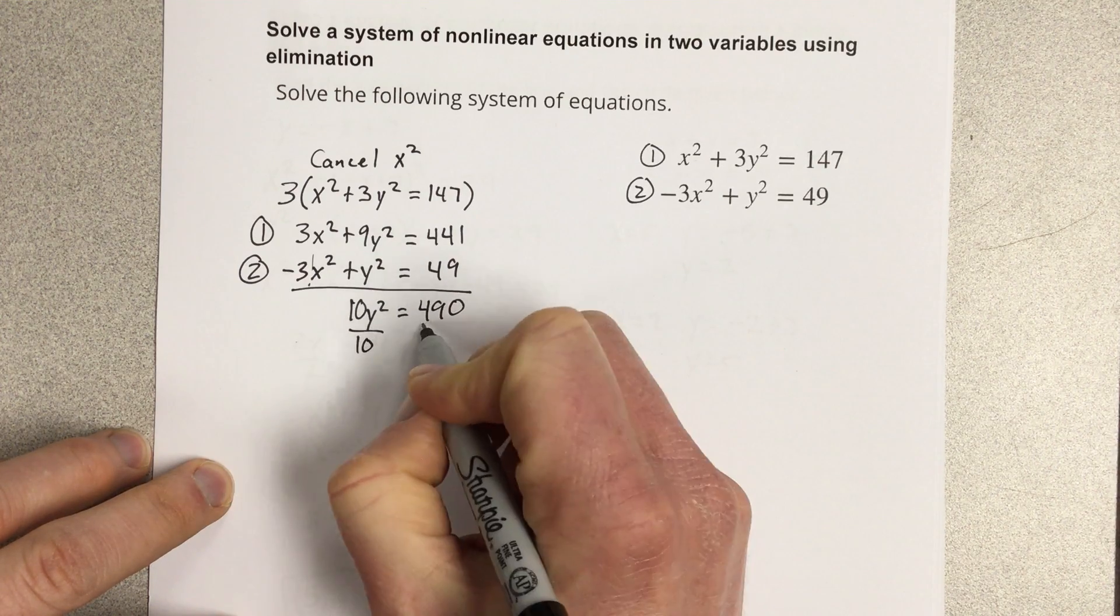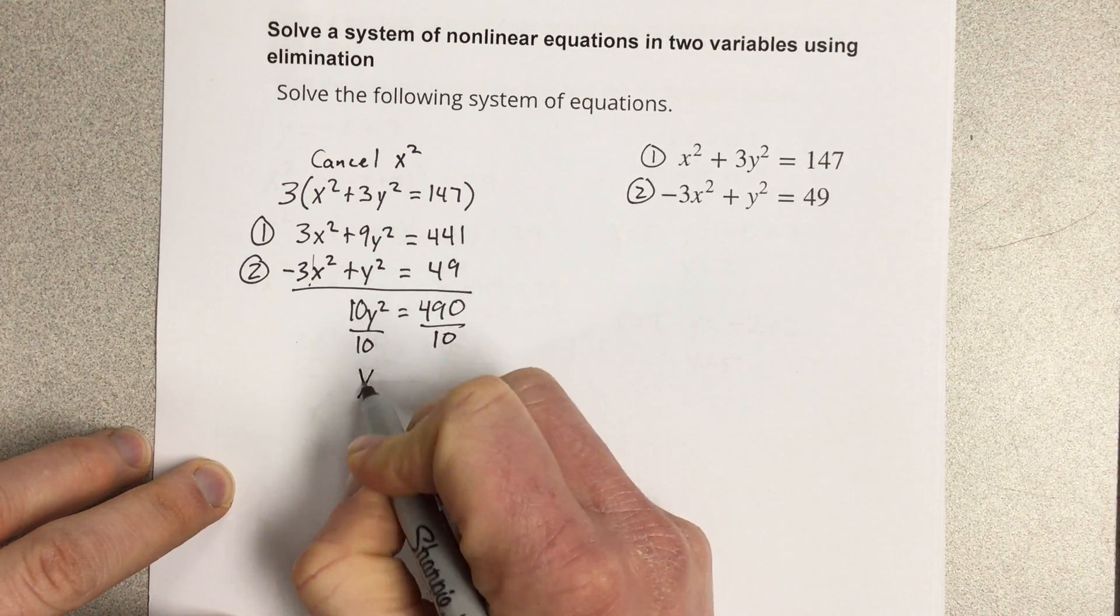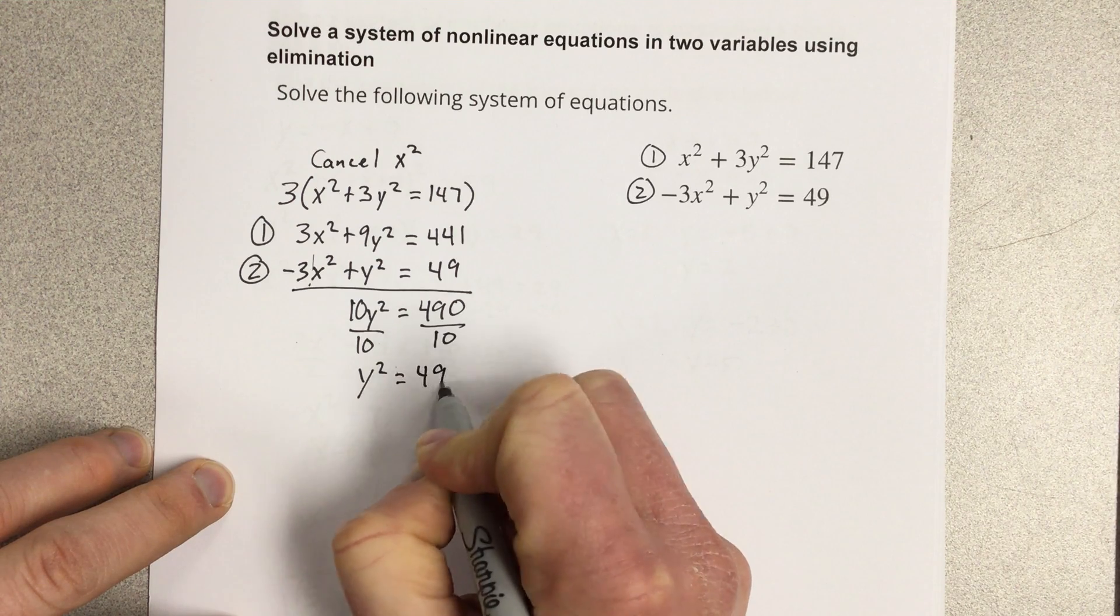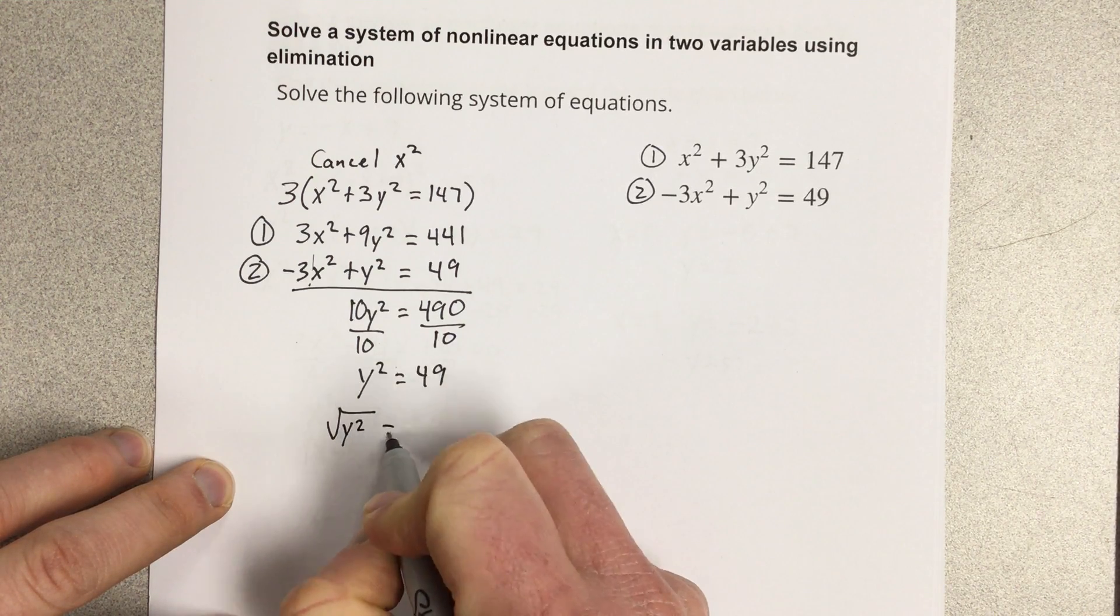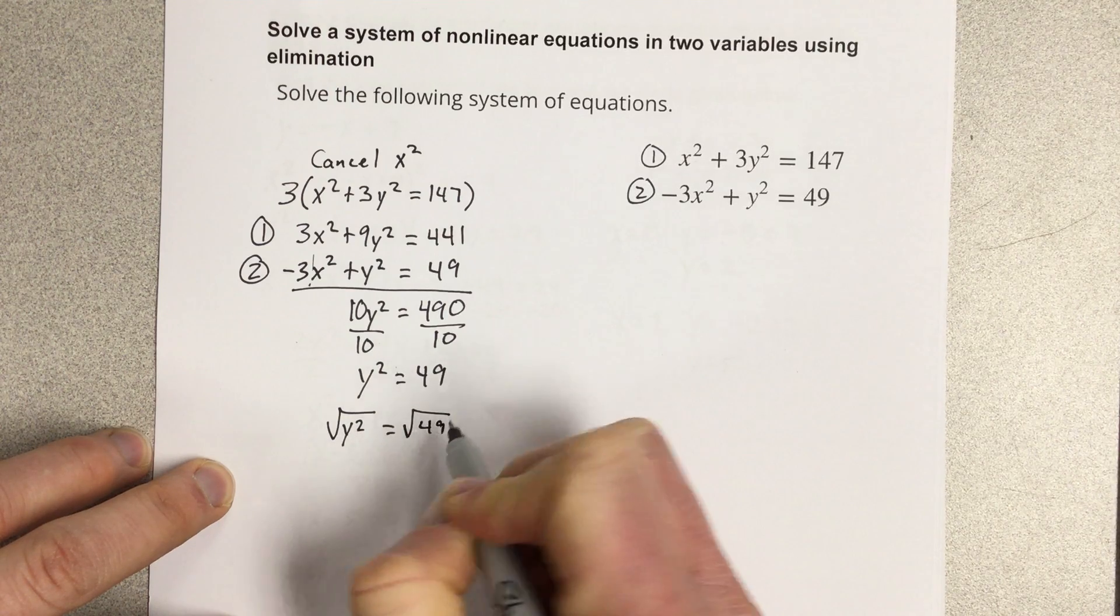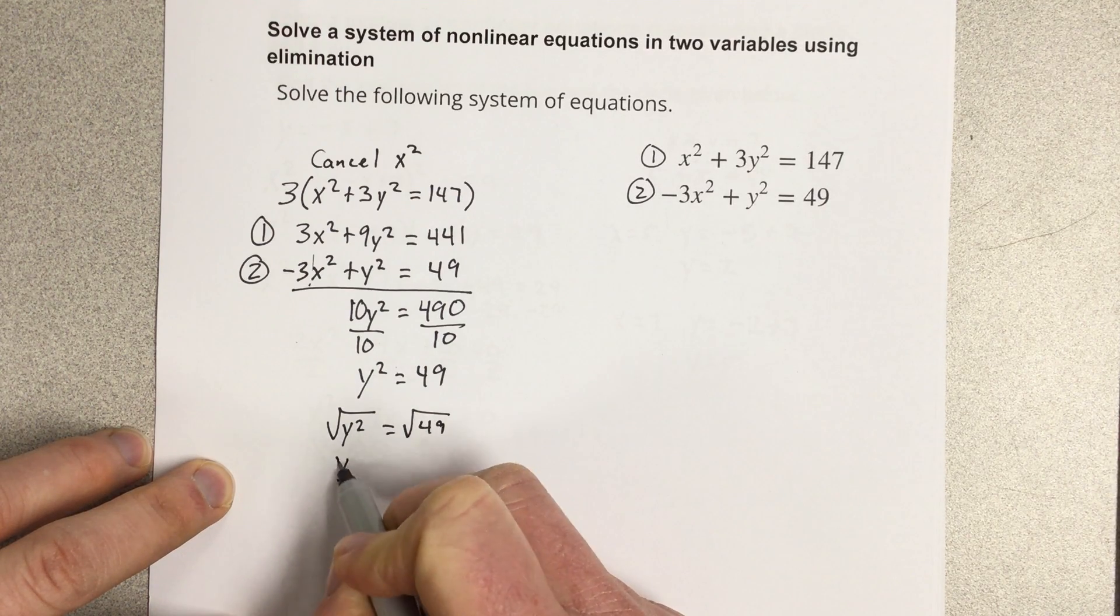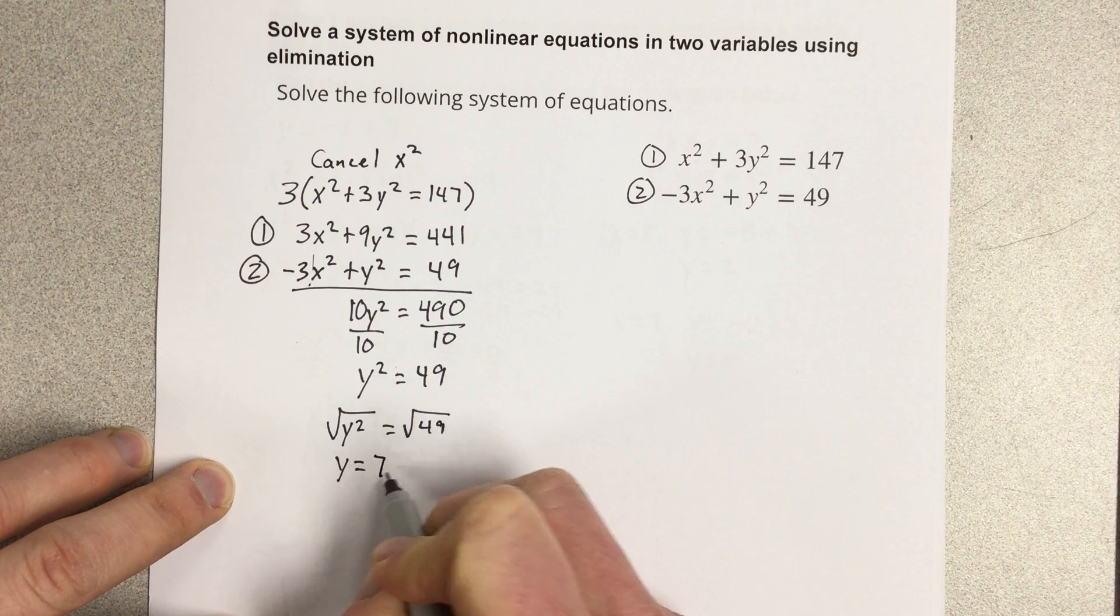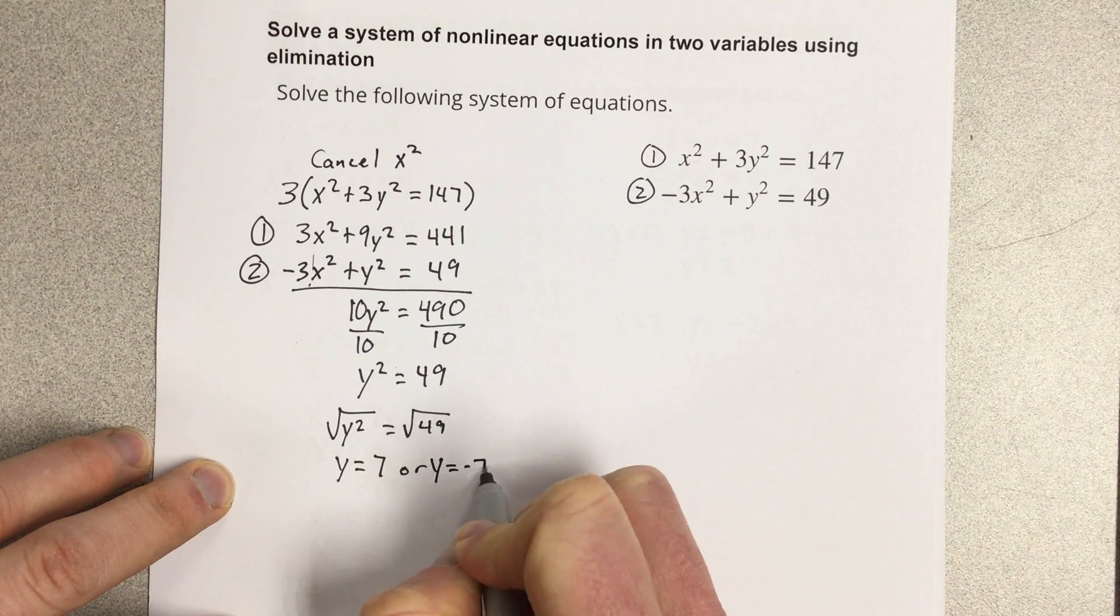Divide by 10 and you get y² equals 49. When I take the square root of each side, I get y is plus or minus 7. So y equals 7 or y equals negative 7.